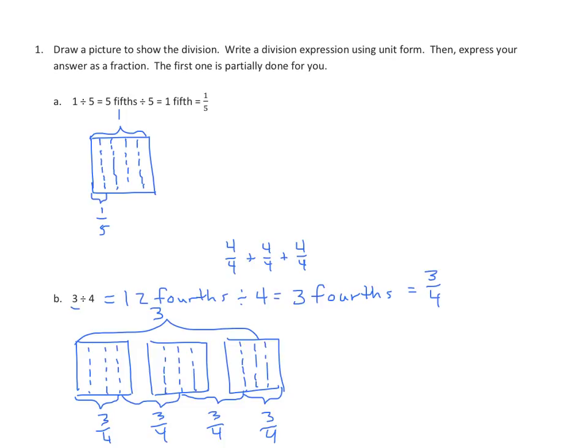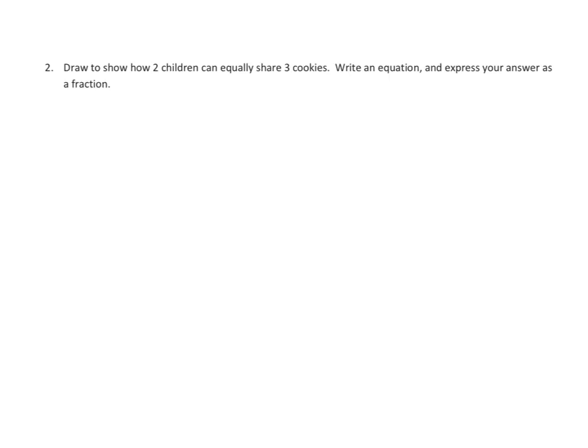Let's continue with a word problem. This says, draw to show how two children can equally share three cookies. So we have three divided by two. And if we write that in unit form, since we're dividing each one of those by two, we have two halves plus two halves plus two halves, which equals six halves, divided by two equals three halves. And then we can convert that to a mixed number, one and one half.